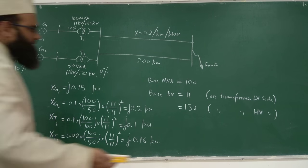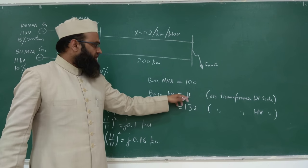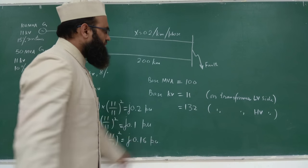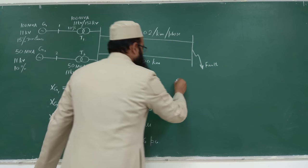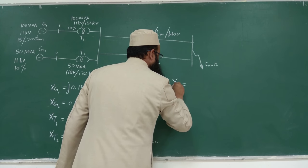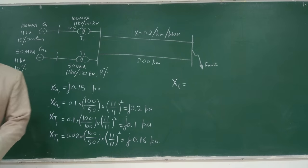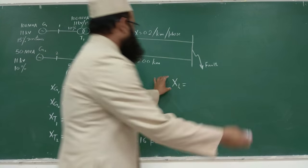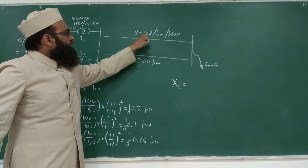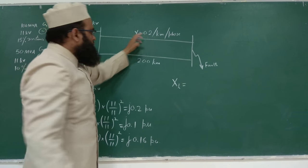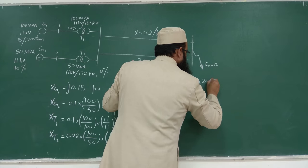For the transmission line, the actual reactance = 0.2 ohms/km × 200 km = 40 ohms. The base impedance Z_base = (KV_base)² / MVA_base = (132)² / 100 = 174.24 ohms. Therefore, the per unit reactance of the line = 40 / 174.24 ≈ j0.23 per unit.